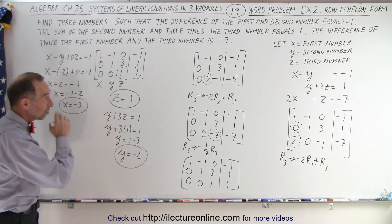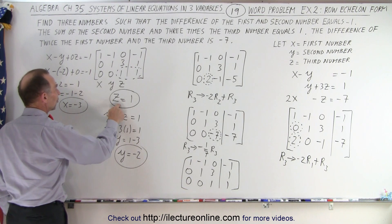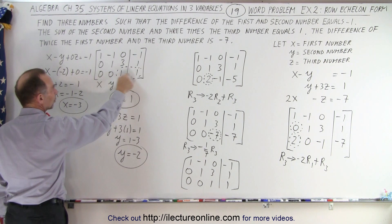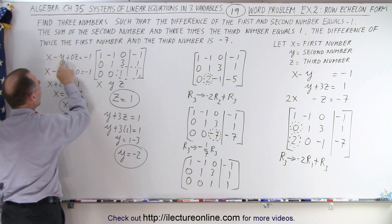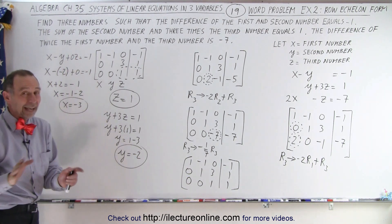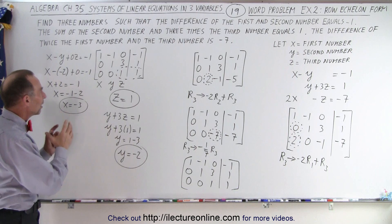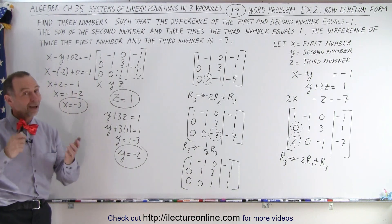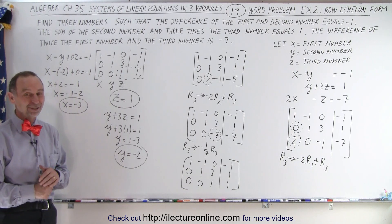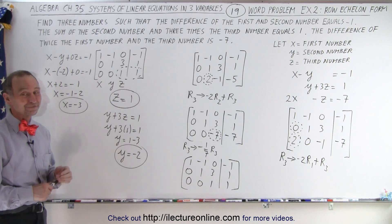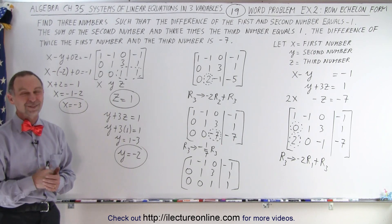By using the row echelon form — ones across the diagonal and zeros on the lower side — you can directly read z from the third row, substitute to find y, and substitute again to find x. Pretty slick method, don't you think? Even if you prefer substitution and elimination, this method is quite neat. On the next video we're going to do the reduced row echelon form to see what that looks like.